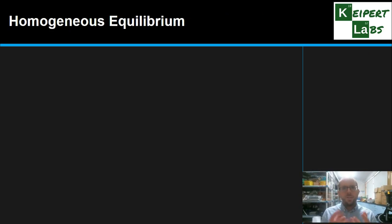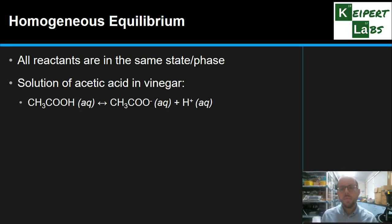Now equilibrium, this idea of this steady state where we have a mixture of reactants and products, we've got processes going backwards and forwards, depending on the state of matter that those substances are in, we can define equilibrium as either homogenous or heterogeneous equilibrium. So homogenous is where all the reactants, all the substances in that equilibrium equation are in the same state or phase. So for example, a solution of acetic acid, which is this CH3COOH, that's the main component in vinegar. And so we have all of these substances are dissolved in water. They're all in the same phase, the aqueous phase. We have a combined molecule and we have separate ions, the acetate ion and the hydrogen ion.